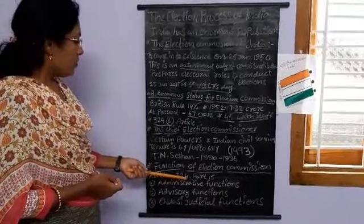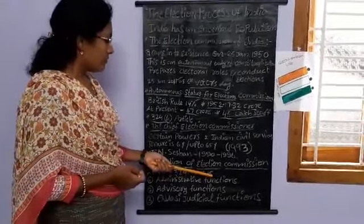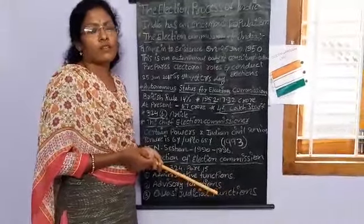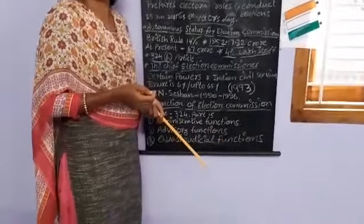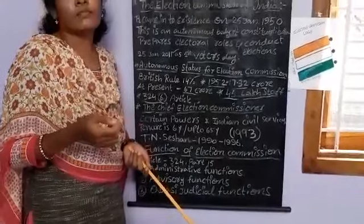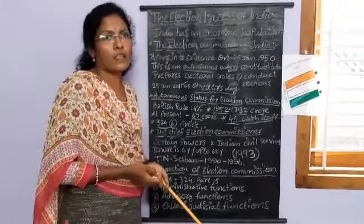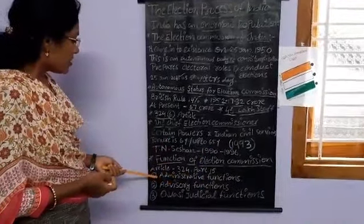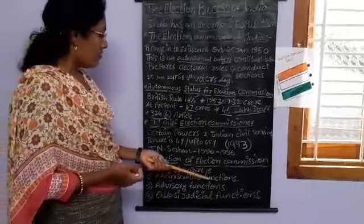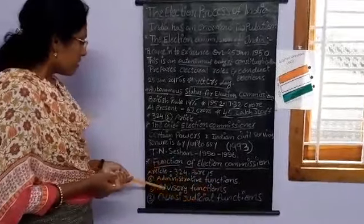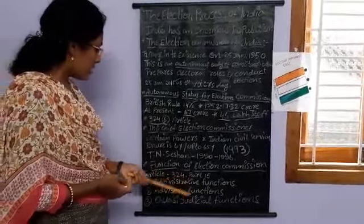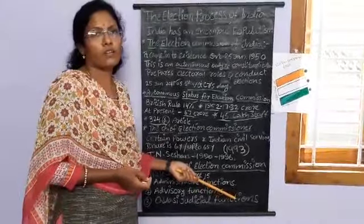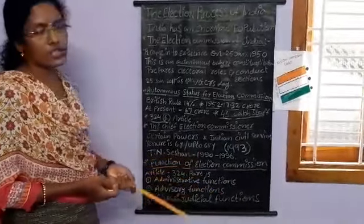Article 324, Part 50 of the Constitution gave certain powers to the Election Commission to conduct elections. The functions of the Election Commission are: first, Administrative Functions; second, Advisory Functions; and third, Quasi-Judicial Functions. Now, Administrative Functions.